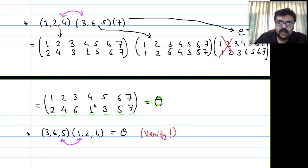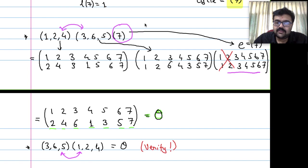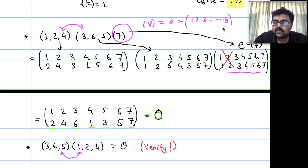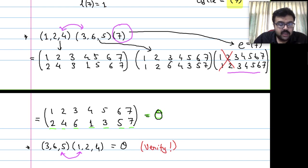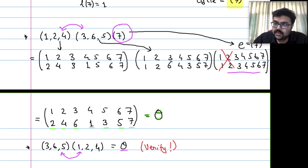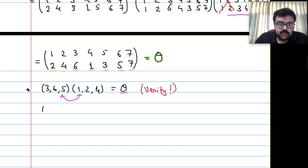The two disjoint cycles commute and can be interchanged. We can also omit the single cycle (7) since it is identity. Any 1-cycle is identity. The cycles (1,2,4) and (3,6,5) are disjoint — they share no common element. So theta is a product of all its cycles.